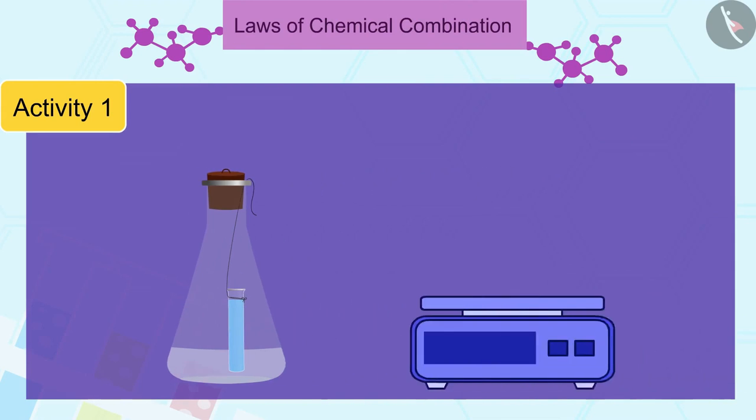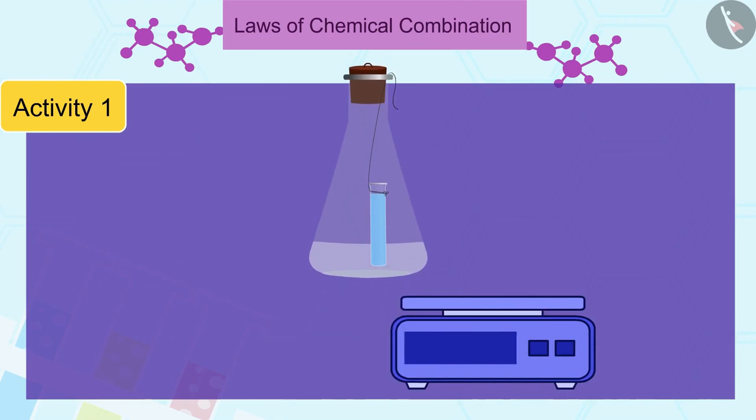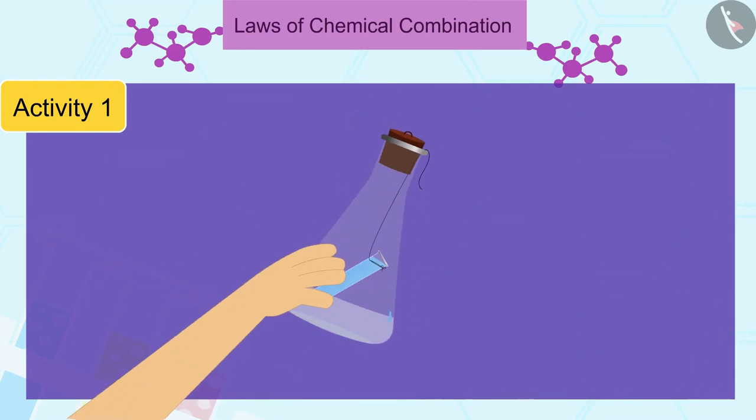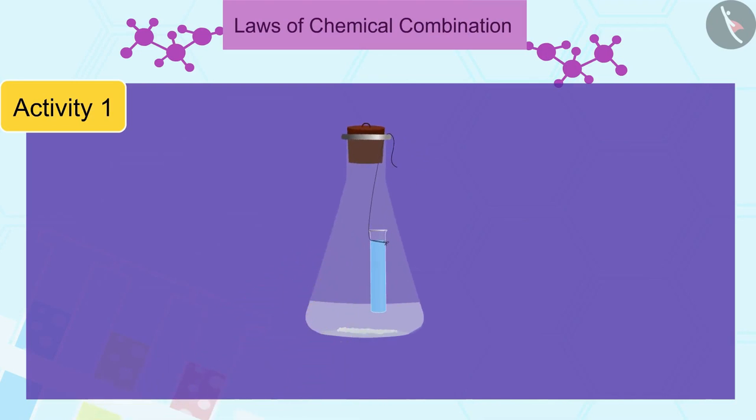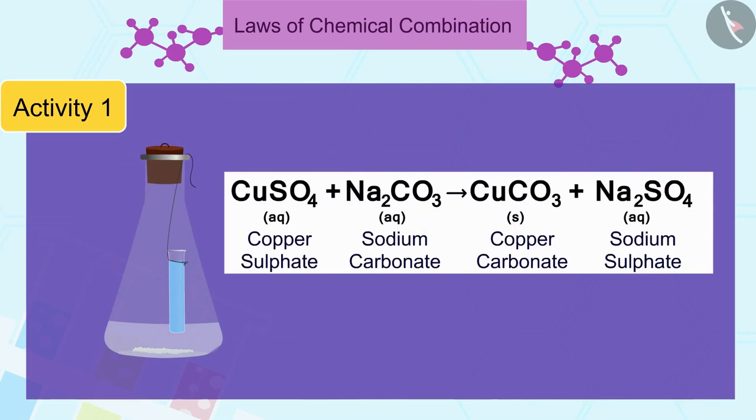Now, carefully weigh the flask containing the contents. Tilt and swirl the flask in such a way that the copper sulfate and sodium carbonate solutions are mixed together. Now, you may be wondering if there is any reaction in the conical flask. Here, copper sulfate and sodium carbonate react.